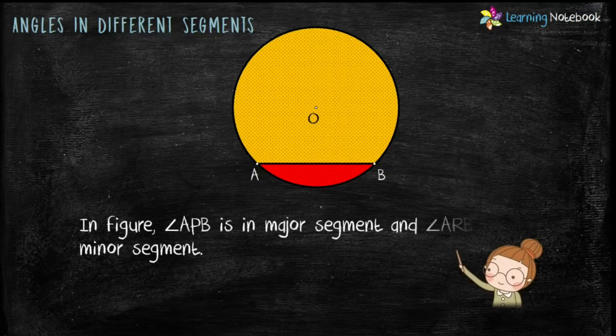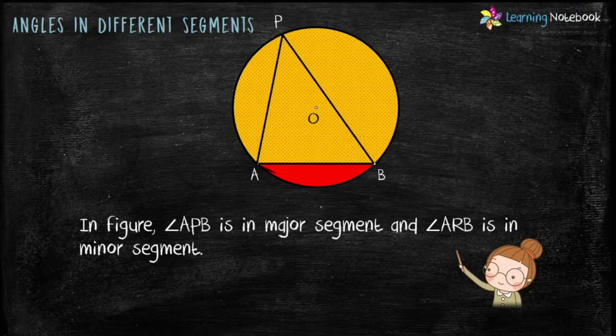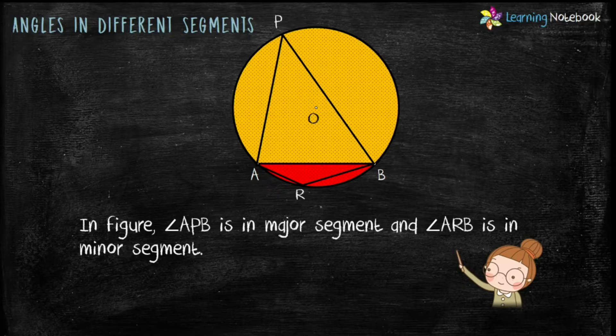Now students, if we draw angle APB in major segment and angle ARB in minor segment, these angles are called angles in different segments.